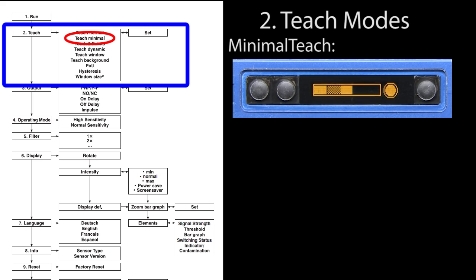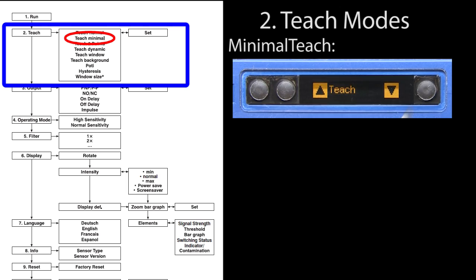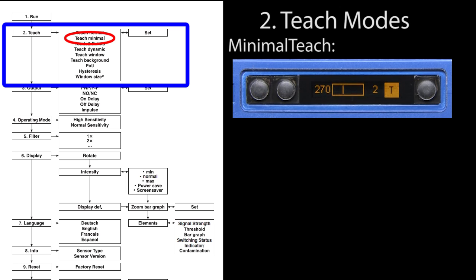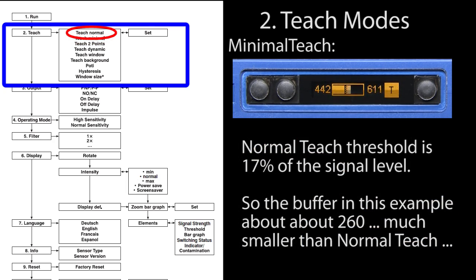Minimal teach is the exact same thing, but let's do it anyway so we can see if we get a different result. Enter into the menu, down to teach, enter into the teach submenu, down arrow to minimal and hit enter. Let's do the exact same thing: set the object near 600 and hit T for teach and it was successful. You can see on the bar graph that the buffer is a lot smaller with minimal teach. Looks like it's around the mid to upper 400s. Remember, minimal teach has a minimal buffer.